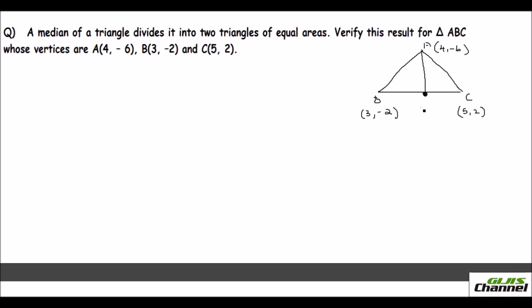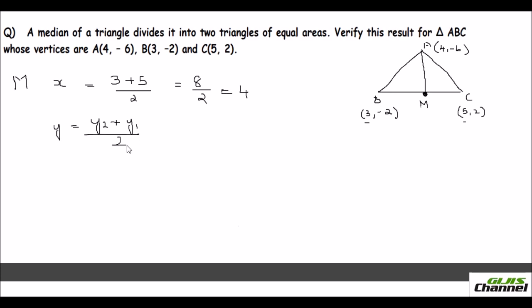Since M is the midpoint of BC, I use the midpoint formula. The x-coordinate of M is (3 + 5)/2 = 8/2 = 4. The y-coordinate is (-2 + 2)/2 = 0/2 = 0. So M is the point (4, 0). Now I need to show that the areas of triangles ABM and ACM are equal.